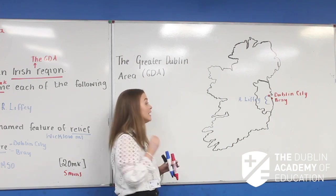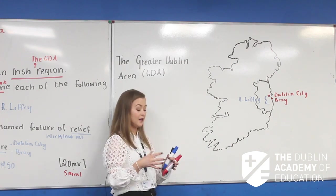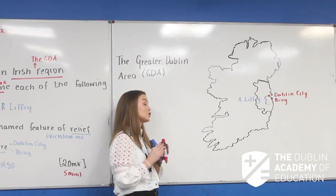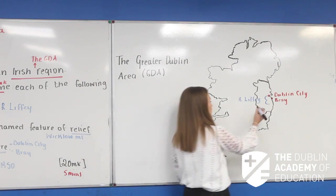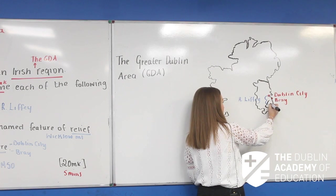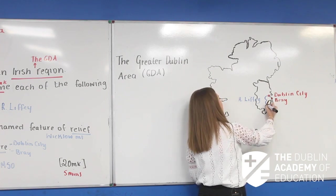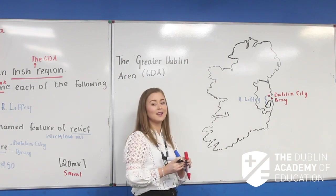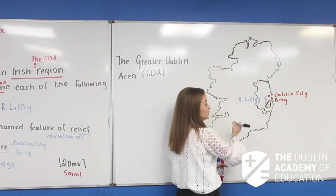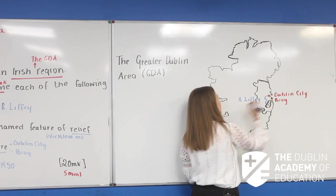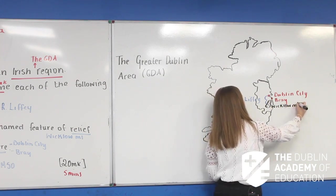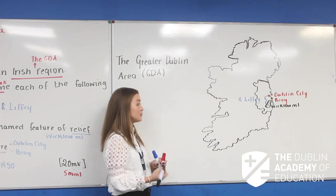That's my two urban centres and also my feature of drainage. Now I'm going to pop in the Wicklow Mountains using the black pen — these are what we had for the 2018 exam question. The Wicklow Mountains go around in just a little shape here. Get it as perfect as possible, but there is human error involved and your examiner understands that. Mark it in — I'm going to keep the River Liffey showing, so I won't shade it in fully. And I'll write down my Wicklow Mountains, which is my upland feature of relief or named mountain area.